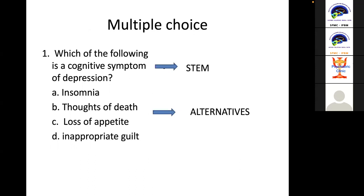There are two parts in a multiple choice question: the stem, which is the question itself — for example, 'Which of the following is a cognitive symptom of depression?' — and the alternatives, which are the choices: insomnia, loss of death, loss of appetite, inappropriate affect. What is difficult is using the correct wording in making the stem, but it is also difficult to find what to put for alternatives.